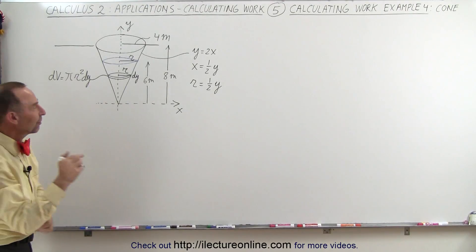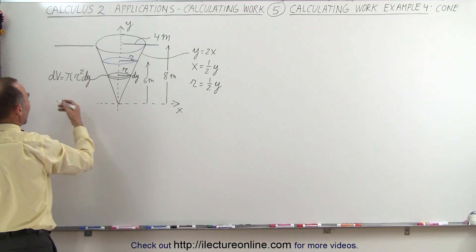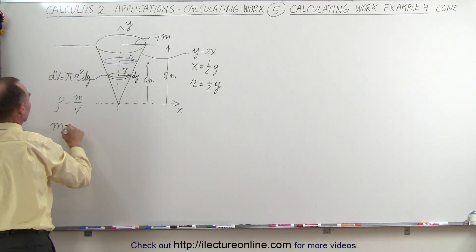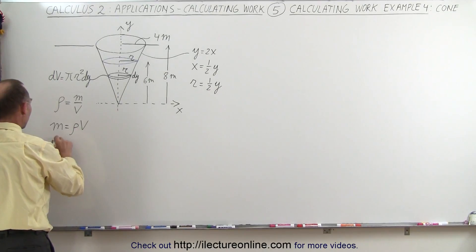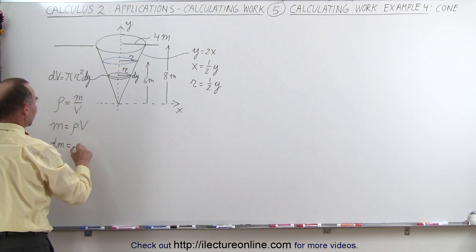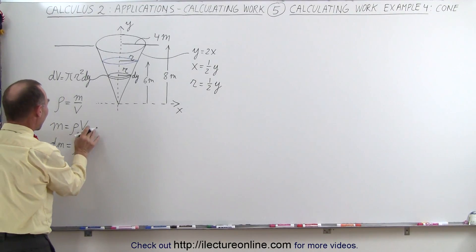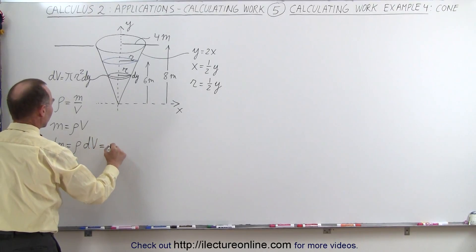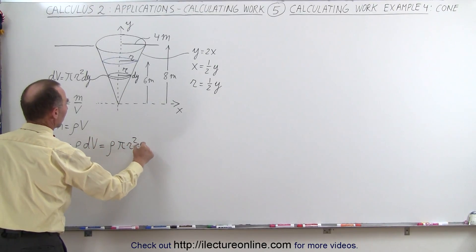Now we need to find the mass of that small little amount of water. And we know that the relationship between mass, volume, and density is that the density is equal to the mass divided by the volume, which means that the mass is equal to the density times the volume, which means that the small amount of mass in that slice is equal to the density of the water, which of course is a thousand kilograms per cubic meter, times the dv, which means that this is equal to the density times pi r squared dy.